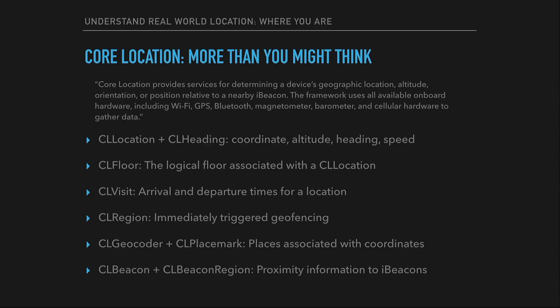More important than understanding what kind of objects you're looking at is knowing where you are. We all know Core Location — it's in Maps. What you might not know is just how much it does. It uses Wi-Fi, GPS, Bluetooth — which is coming up in our indoor demonstration — magnetometer, and barometer. You have regular location, indoor location with floor, visits, regions, geocoder, placemark — and CL Location plus CL Beacon Region are what help you get inside with Core Bluetooth.